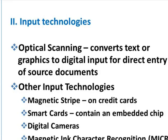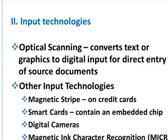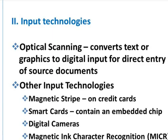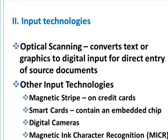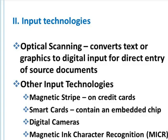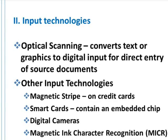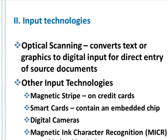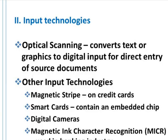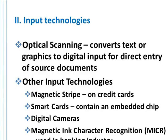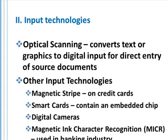We also have other types of input devices. Magnetic stripes, like on your APU ID card, only contain about 15 characters — not a whole lot of data. However, credit card companies have reissued their magnetic stripe cards with a smart card that has an embedded chip containing a lot more information, especially security information to protect your private data.